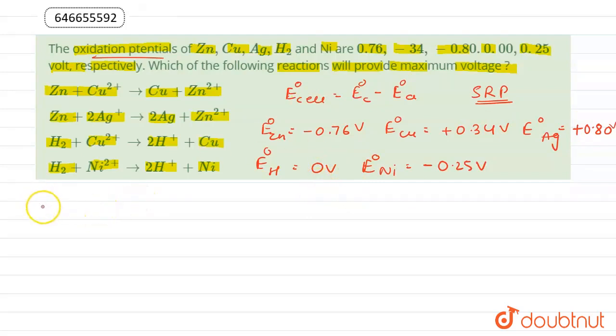In the first reaction, zinc is getting oxidized and copper is getting reduced. So E°cell becomes E°copper - E°zinc, that is equal to +0.34 - (-0.76), and on solving this we get the value 1.1 volts.